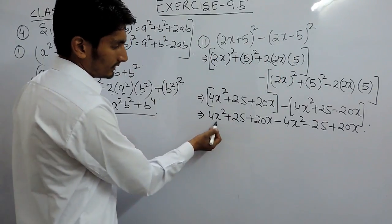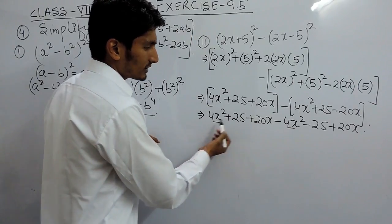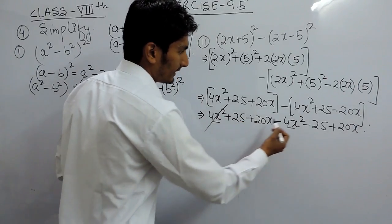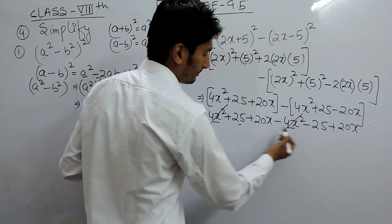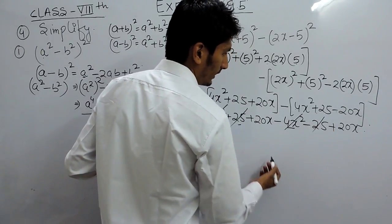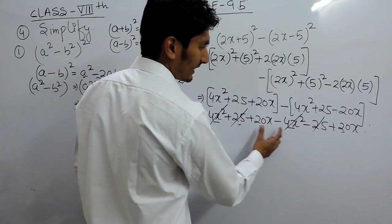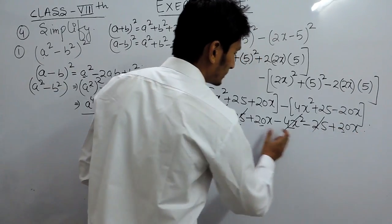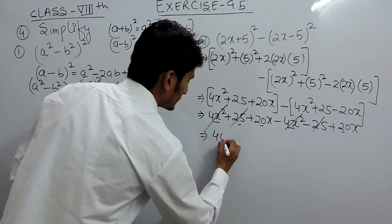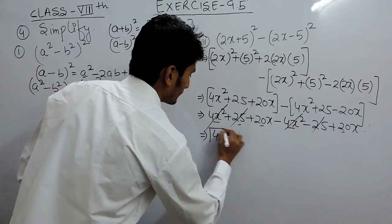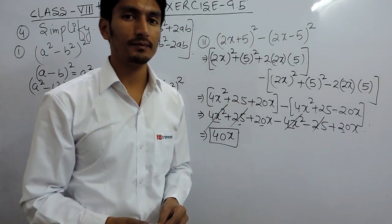Now, 4x² and 4x² are like terms — one positive and one negative — so these cancel out. Similarly, 25 and −25 cancel out. And 20x and 20x are like terms; plus plus gives plus, so 20 + 20 = 40x. So solving this, 40x is the answer.